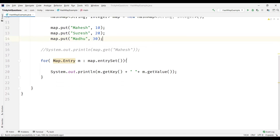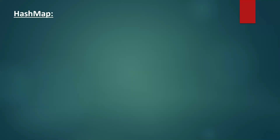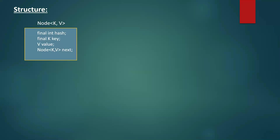Now let us see how HashMap works internally. The structure of HashMap has a Node class with key and value in it. This is a static inner class within the HashMap class and it has the following attributes: a hash variable of integer type which is final, a key which is also final, a value, and a node reference to itself — this node reference is what allows chaining.